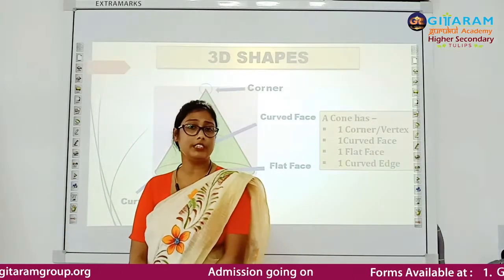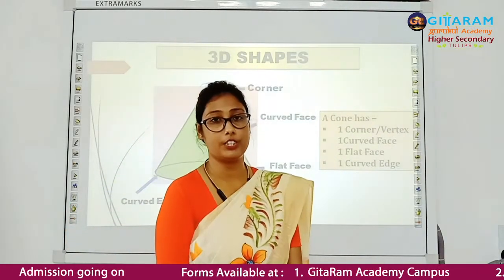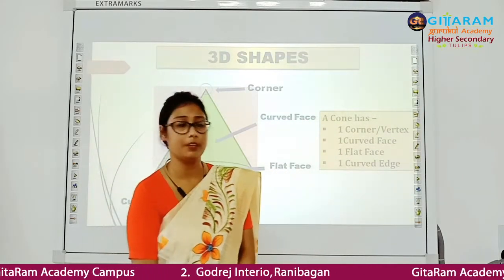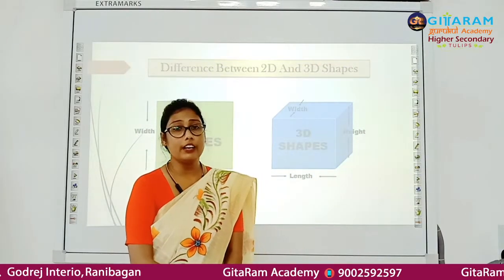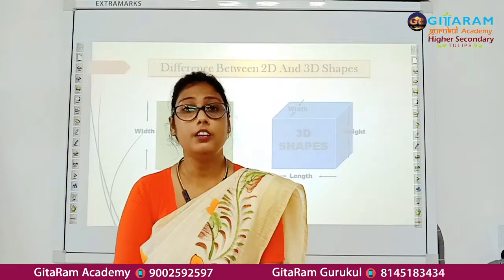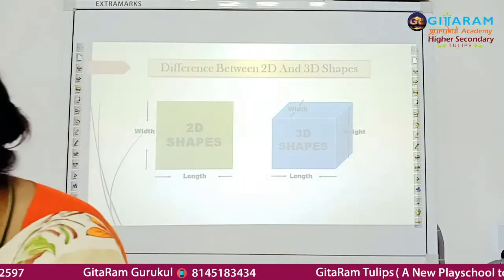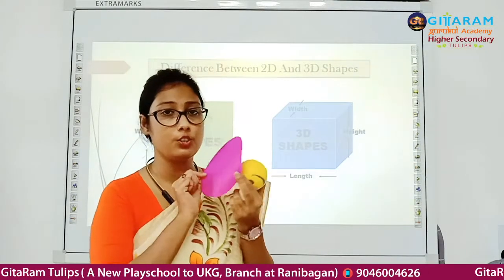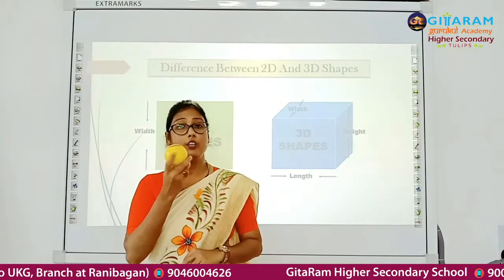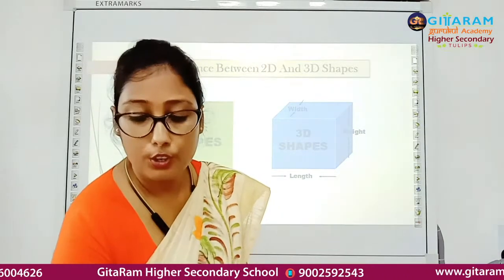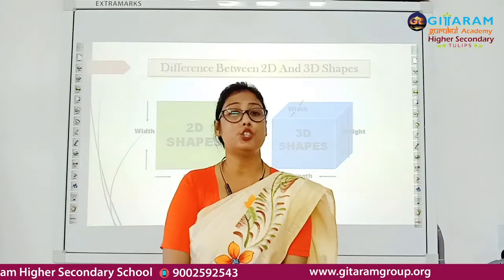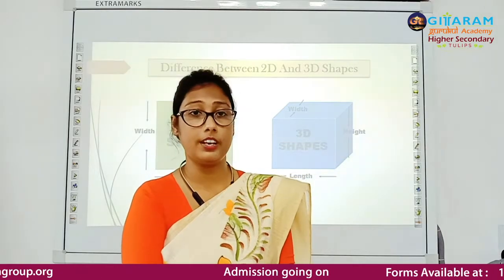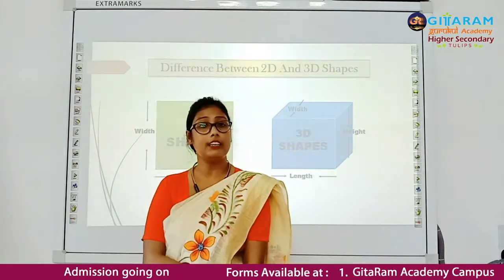Now students, what is the difference between 2D shapes and 3D shapes? 2D shapes are flat shapes and 3D shapes are solid shapes. 2D shapes are on a flat surface — no thickness, no depth. But 3D shapes are solid. Also, 2D shapes have two dimensions only — length and width — but 3D shapes have three dimensions: length, width, and height.